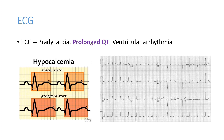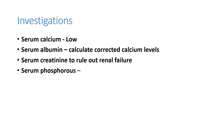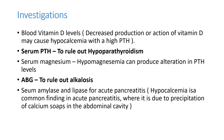Investigations include serum calcium — if low, calculate corrected calcium if albumin is low. Serum creatinine should be done, as it will be elevated in renal failure. Serum phosphorus should be done to correlate with hypocalcemia. Vitamin D levels should be checked in all patients, as decreased production or action of vitamin D can cause hypocalcemia with high PTH. PTH and magnesium levels should also be done, as hypomagnesemia reduces the action of PTH.